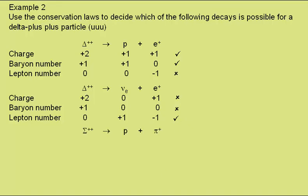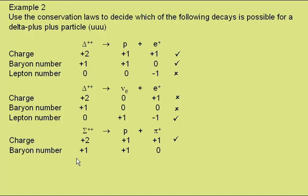Finally, does the delta-plus-plus become a proton plus a pi-plus? For charge, the delta-plus-plus has a charge of plus two, the proton plus one, the pi-plus plus one — charge is conserved. Baryon number: the delta-plus-plus has baryon number plus one, as does the proton; the pi-plus is a meson with zero baryon number, so this is possible. And in terms of lepton number, they all have zero lepton number, so this is possible. So the third decay is the one which could be observed.